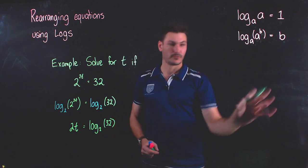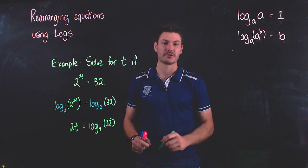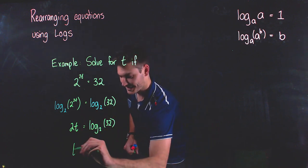And the last line I'm going to write here before moving over is I need to solve for t, and hence I'm going to divide both sides by two or times by a half. So I'm going to get t is equal to one half of log base two of 32.